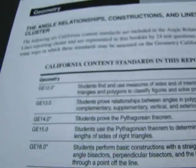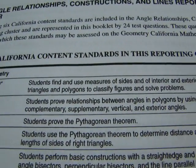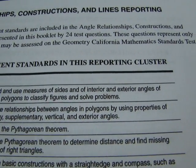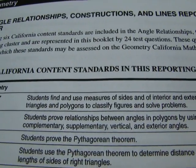Hi and welcome to standard 12. Standard 12 is about using interior and exterior angles to solve and classify side lengths and polygons. Let's read it. Standard 12: students find and use measures of sides and of interior and exterior angles of triangles and polygons to classify figures and solve problems.